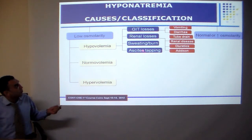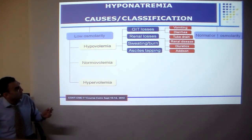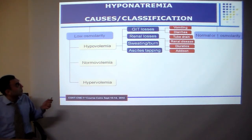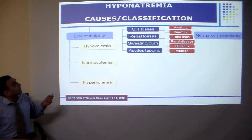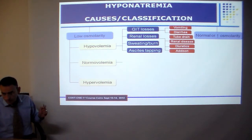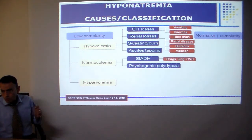Other causes of hypovolemic hyponatremia include diuretic use and Addison's disease.